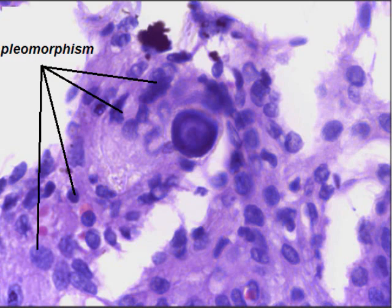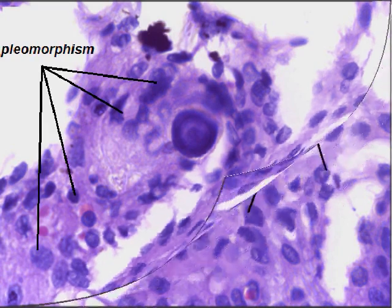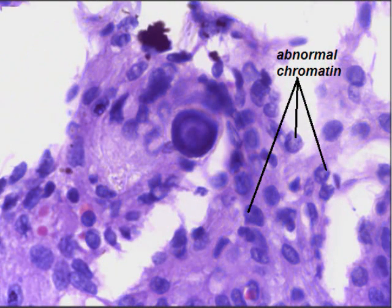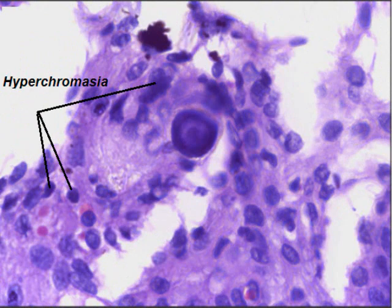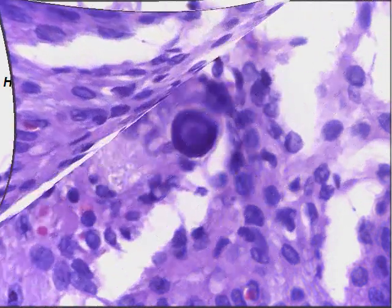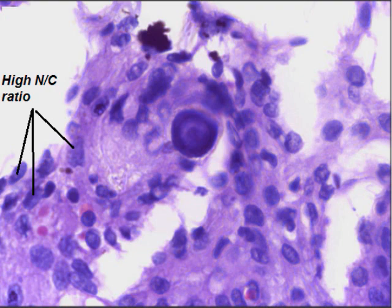At higher magnification, there is pleomorphism — variation in size and shape of the nuclei — abnormal chromatin, coarse chromatin, and hyperchromasia, meaning darkly stained nuclei. There is also a high nuclear-to-cytoplasmic (N:C) ratio, meaning a large portion of the cell is occupied by the nucleus.